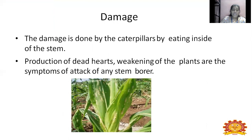The damage: the shoot hole is the early symptom, caused by the caterpillar eating inside the stem. The production of a dead heart — the browning of the plant — is a symptom of stem borer attack.